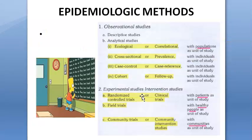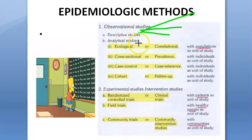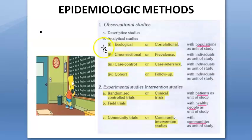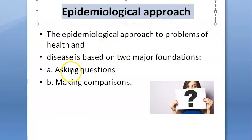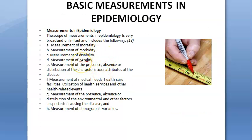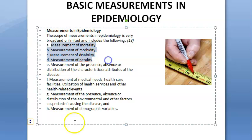Methods: observational studies include descriptive studies — covering time, place, and person distribution — and analytical studies including ecological, cross-sectional, case-control, and cohort studies. Experimental studies include randomized controlled trials, field trials, and community trials. The epidemiological approach is to ask questions and make comparisons between case and control groups to derive conclusions.